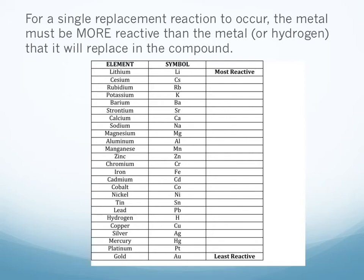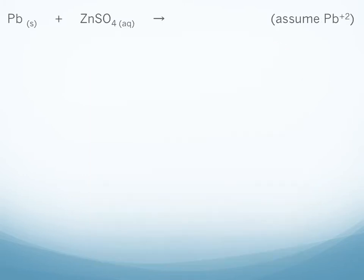Let's say the metal reactant is calcium. Calcium can replace, in a single replacement reaction, anything that is below it on the activity series. So usually the metal will replace a metal ion; however, it could replace hydrogen. A metal can replace a metal ion or hydrogen if it is more reactive. So calcium could not replace anything above it on the activity series — calcium would be less reactive than those metals.